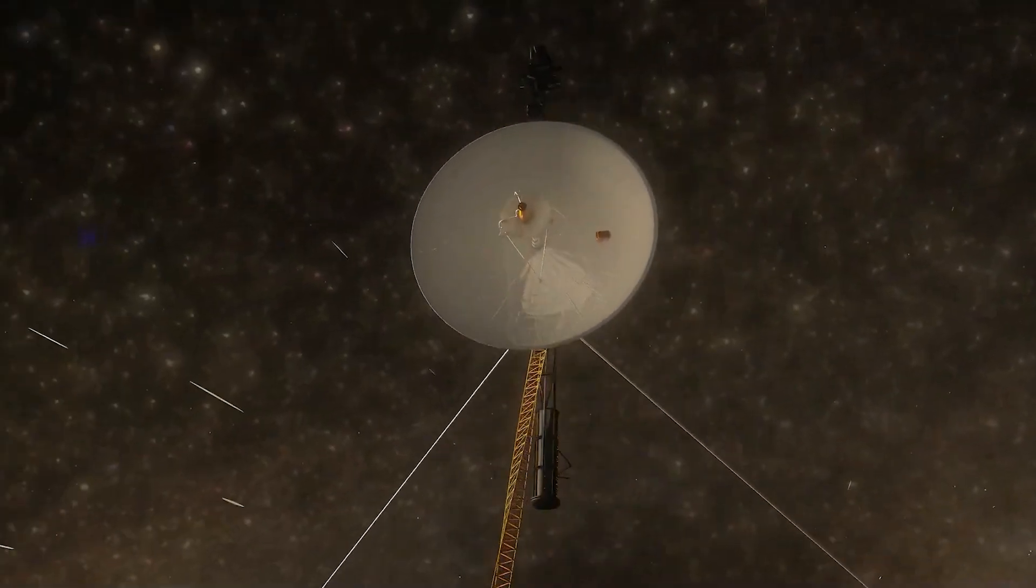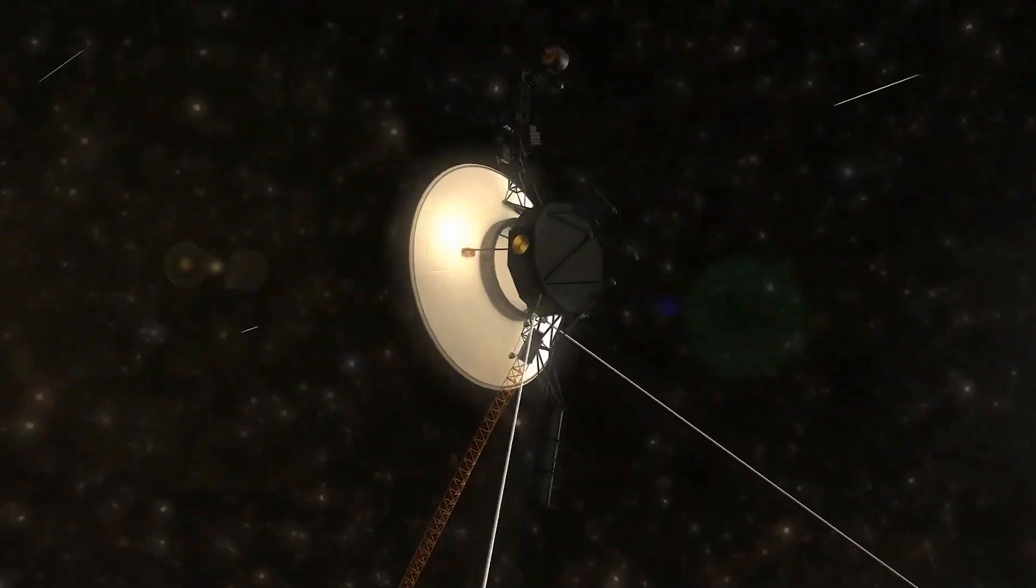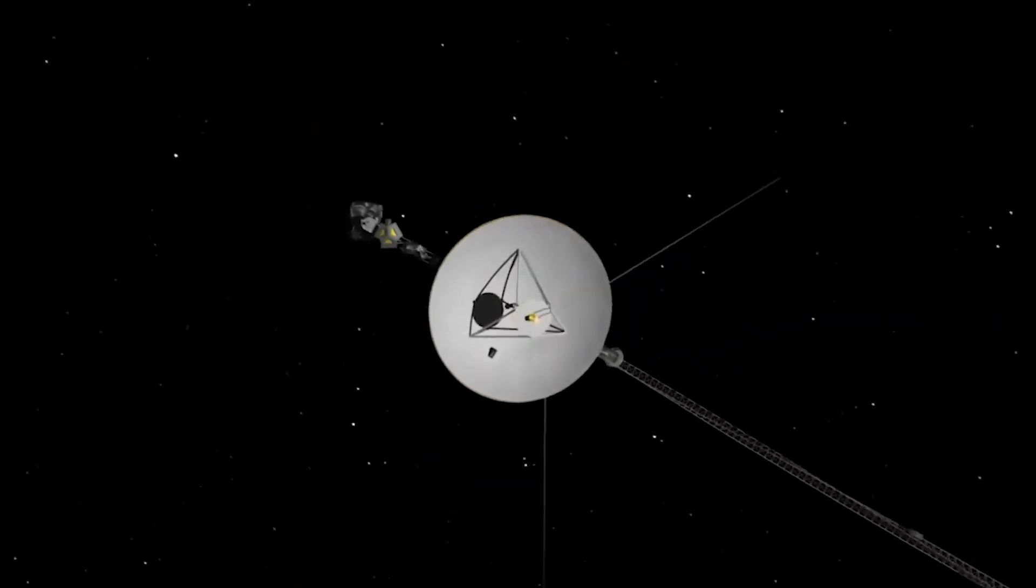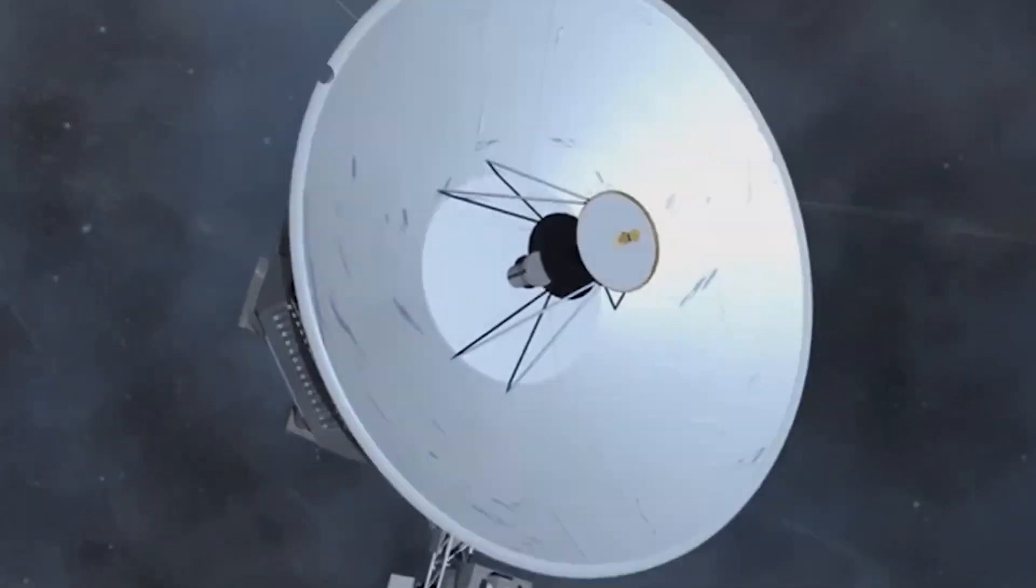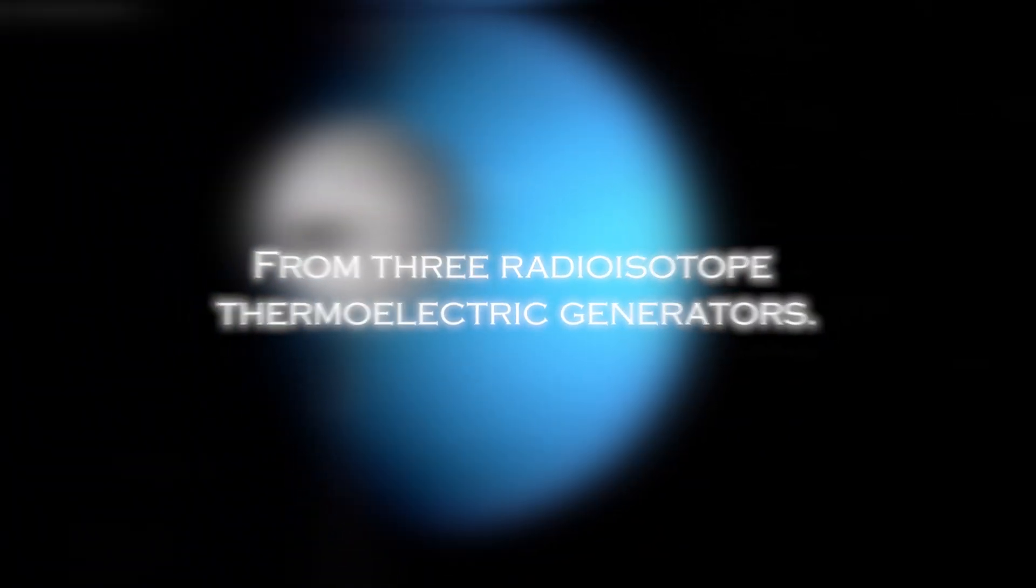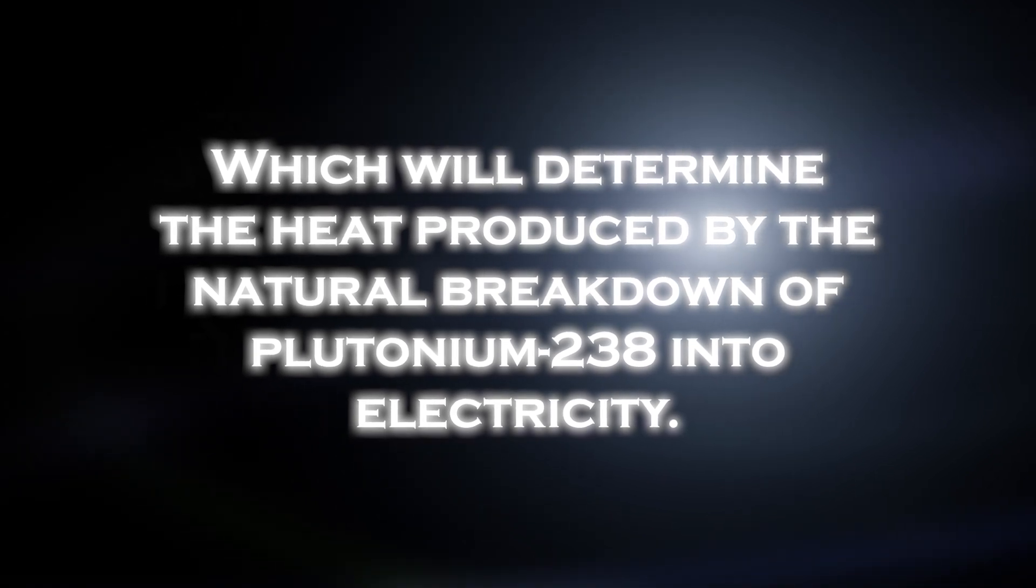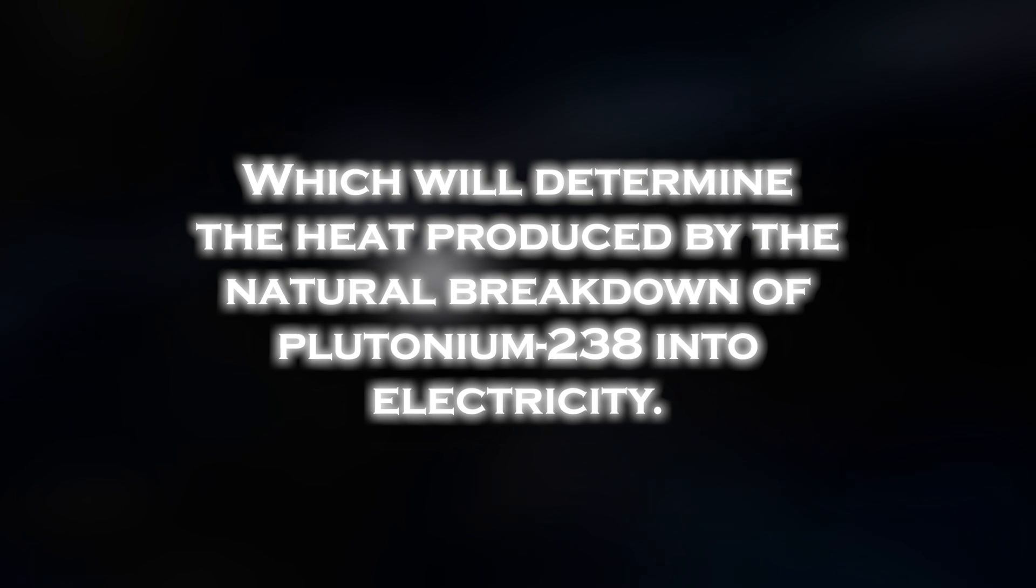However, this milestone was not easy to achieve. As the probe moved farther away from the sun, the amount of sunlight available to power its instruments significantly decreased. The spacecraft's power is generated primarily from three radioisotope thermoelectric generators, which convert the heat produced by the natural breakdown of plutonium-238 into electricity.